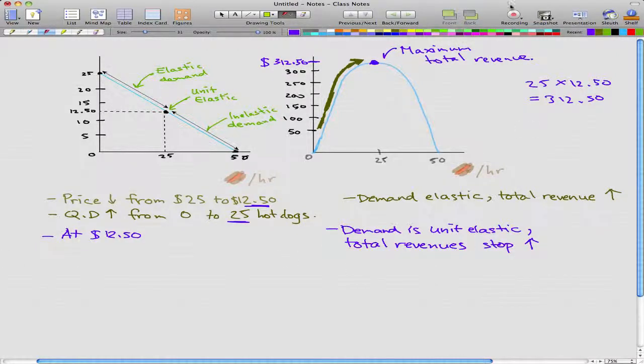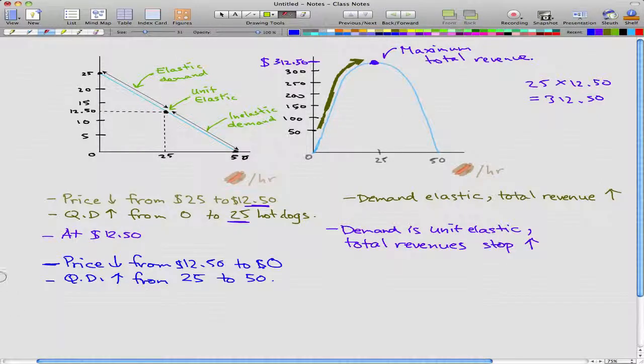Now for the last part. The last part will focus on the right side of the bell-shaped curve. Let's say that price fell from $12.50 to $0. In this case, our quantity demanded increases from 25 to 50. And in this case, our demand is inelastic.